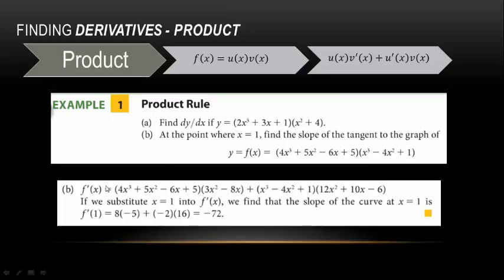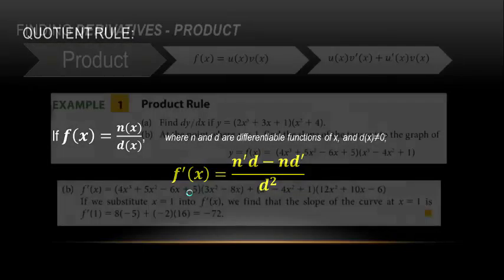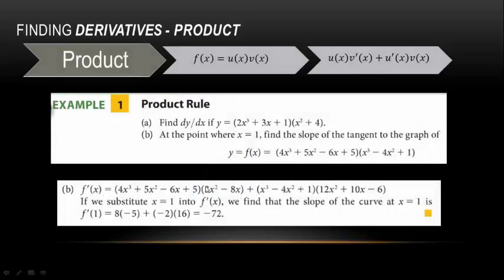Since we need the derivative at x = 1, instead of fully multiplying out with FOIL it's smarter to just plug in 1 now, because 1 to any power is always 1. Plugging in we get 4 + 5 − 6 plus 5 times (3 − 8) plus (1 − 4 + 1) times (12 + 10 − 6), which gives −72. If asked for the formula, leaving it in product form is acceptable. There is also a box or matrix method for organizing the multiplication.